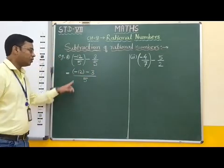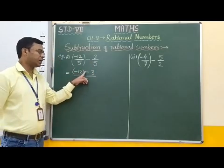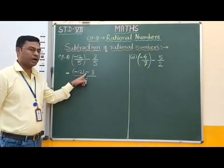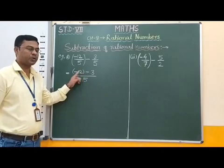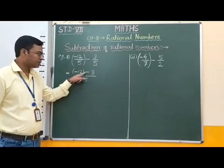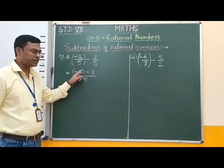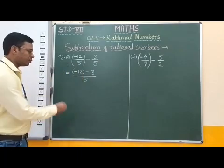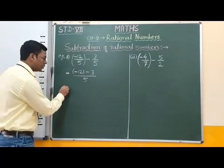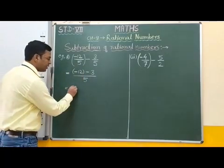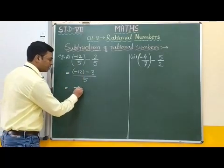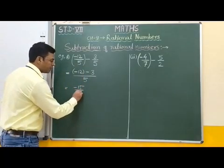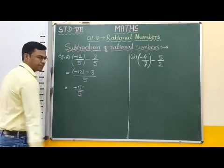Now, minus 12 minus 3 — we know how to subtract two integers. Subtraction of integers: minus 12 minus 3, which is equal to minus 15, and denominator 5.